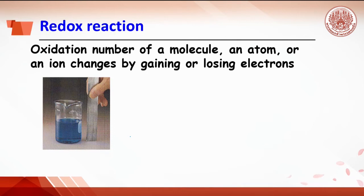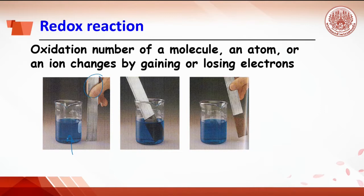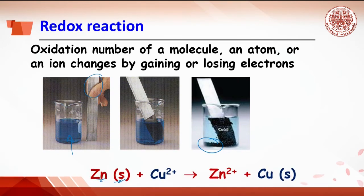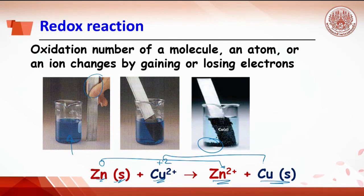Oxidation-reduction reaction or redox reaction is a chemical reaction in which the oxidation number of molecules, atoms, or ions changes by gaining or losing electrons. For example, when a zinc strip is immersed into copper solution and the reaction proceeds, the deposition of copper will be observed. The equation can be written as: zinc solid reacts with copper ion to get zinc ion and copper solid. It can be seen that the oxidation number of zinc changes from zero to plus two, and the oxidation number of copper changes from plus two to zero.